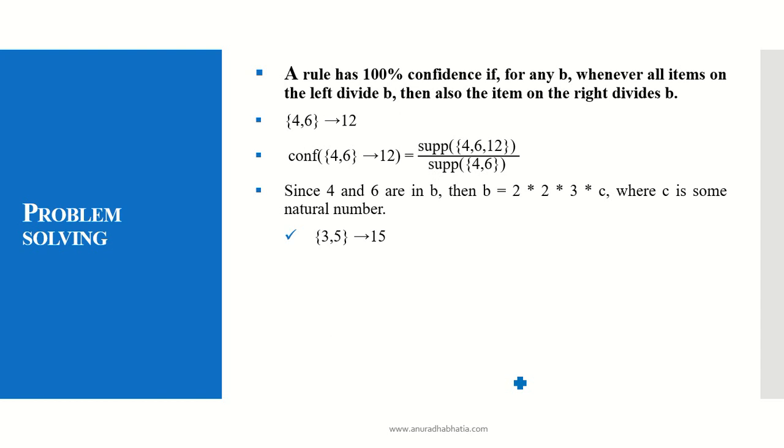Similarly, for {3,5} the LCM is 15. {8,10} LCM is 40, so B equals 2×2×2×5×C where C is any natural number. {3,4,5} LCM is 60. {1,2} LCM is 2. {2,3,5} LCM is 30. These particular elements will belong to baskets 32, 60, 40 and 15 and they will have 100% confidence.